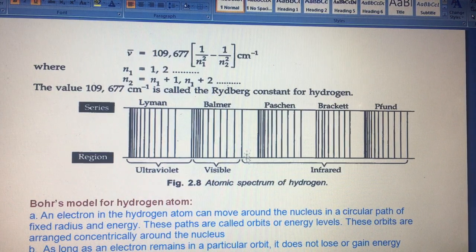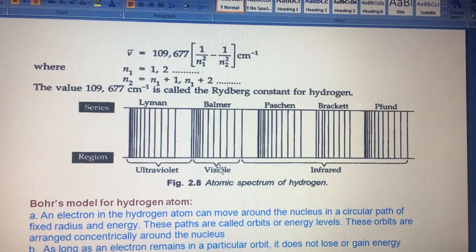If we talk about which region these hydrogen spectrum series fall in: Lyman series falls in ultraviolet region, Balmer series is visible in the visible region, and Paschen, Brackett, and Pfund series fall in infrared region. This explains which series of atomic spectrum fall in which electromagnetic spectrum region.